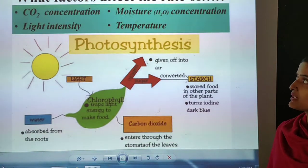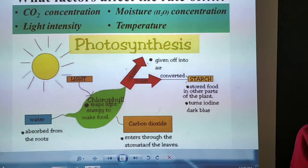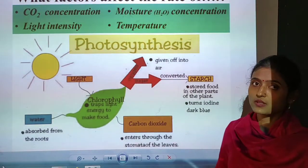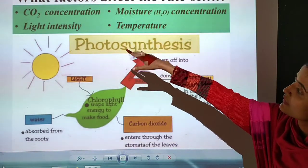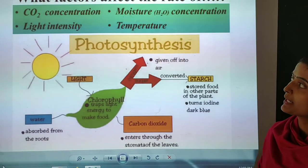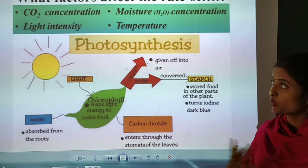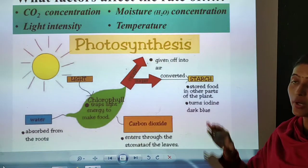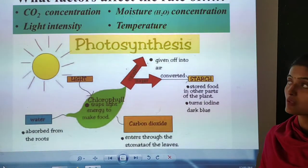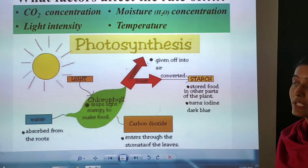So after the definition, we will discuss about what factors affect the rate of photosynthesis. Here it is given: the first one is carbon dioxide concentration, the second one is water concentration or moisture, third and very important is light intensity, and the last one is temperature.